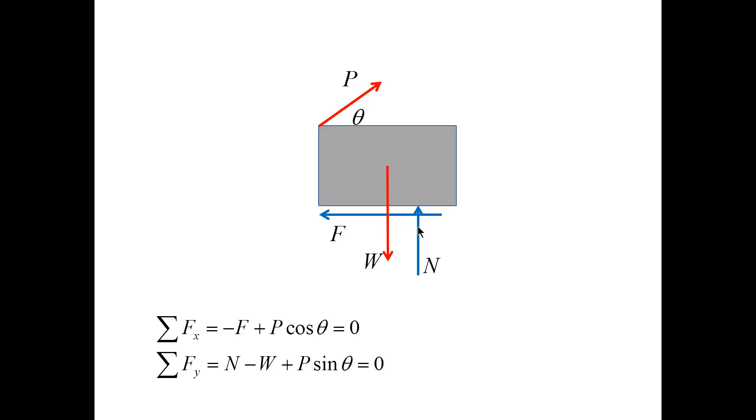In addition to the force equilibrium equations, we write the condition for impending motion. These three equations can be solved by expressing F and N from the equilibrium equations in terms of P, W, and theta, and then combining it with the impending motion condition, so that we obtain the expression for the force P in terms of prescribed mu, W, and theta.